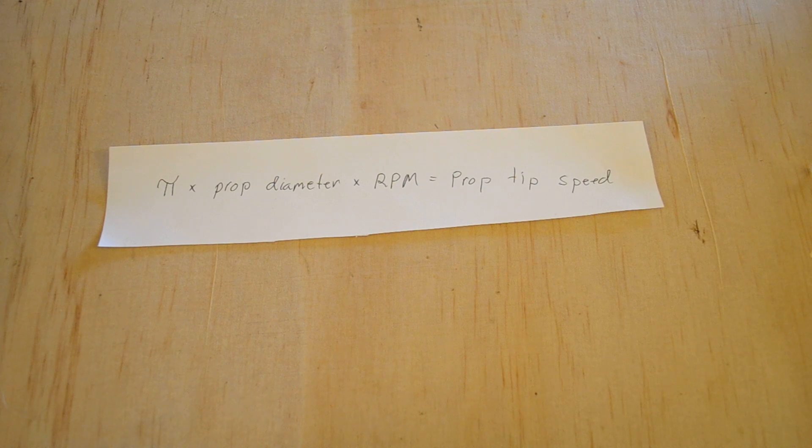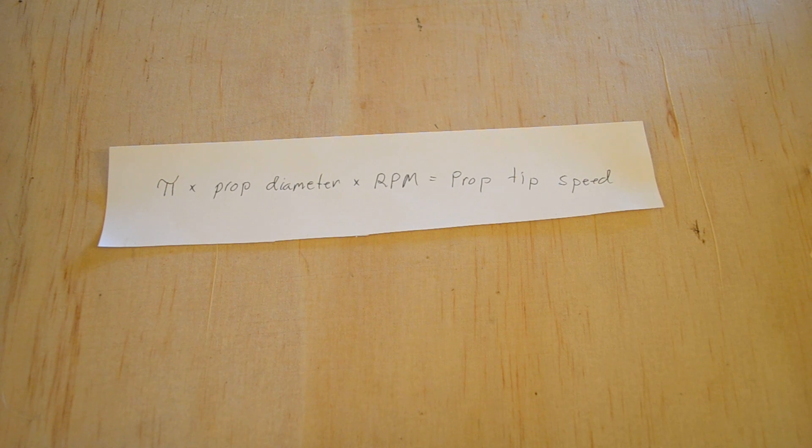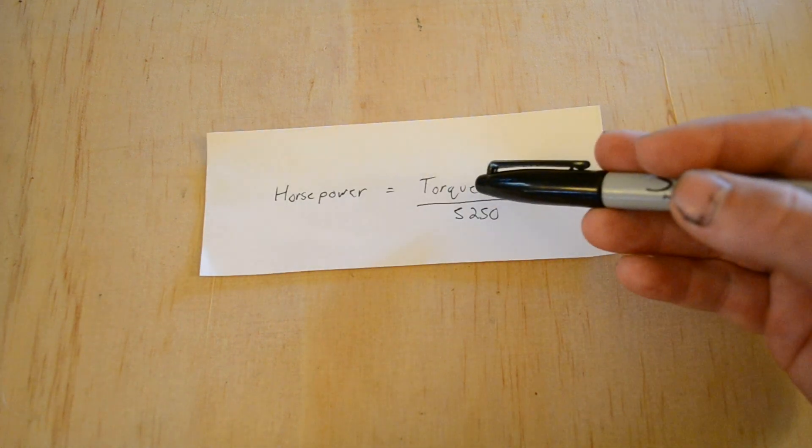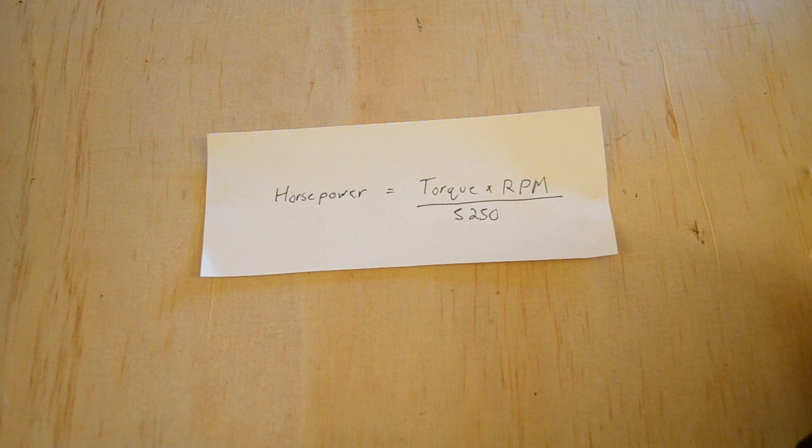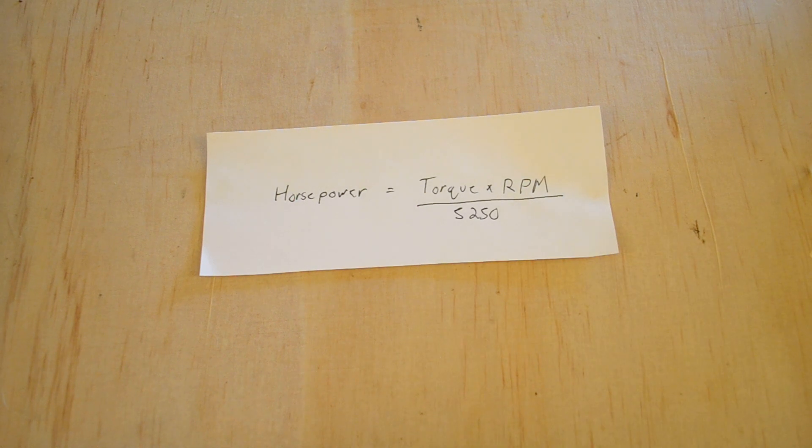This is a problem because propeller tips really shouldn't exceed 75% the speed of sound. If they go any faster than that, they lose a lot of their efficiency. And so this basically means that the bigger your propeller gets, the slower your engine has to turn. If I use a 7 foot 10.5 inch original prop, it can only turn 2000 RPM before the tips exceed 75% the speed of sound.